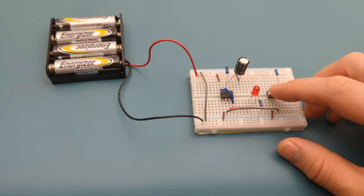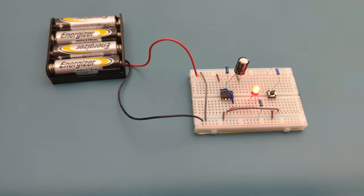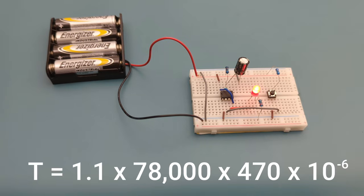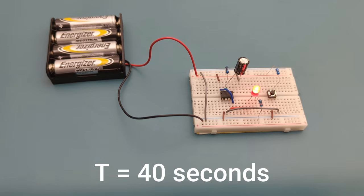Press the latch switch. The LED turns on. It will stay on for between 30 and 40 seconds before it turns off again. The 555 monostable time formula determines the delay: T equals 1.1 times R or resistor times C or capacitor. In this circuit, R equals 78,000 ohms, C equals 470 microfarads, T equals approximately 40 seconds.